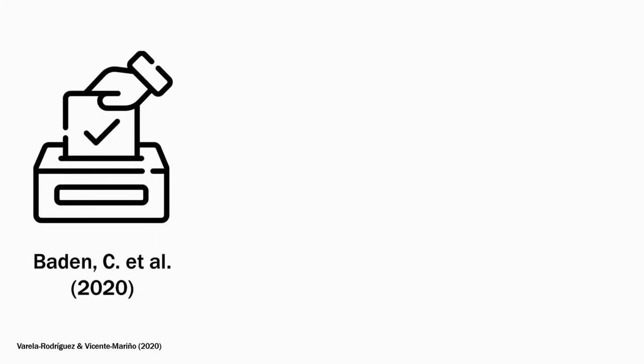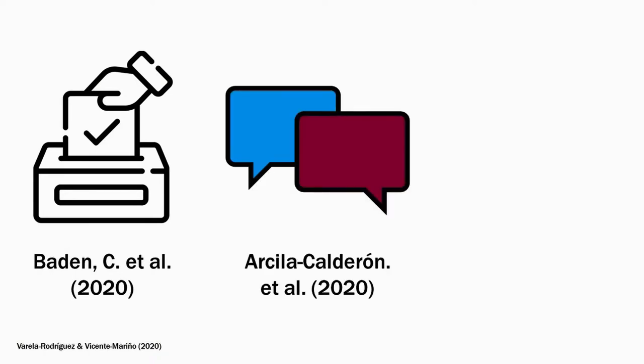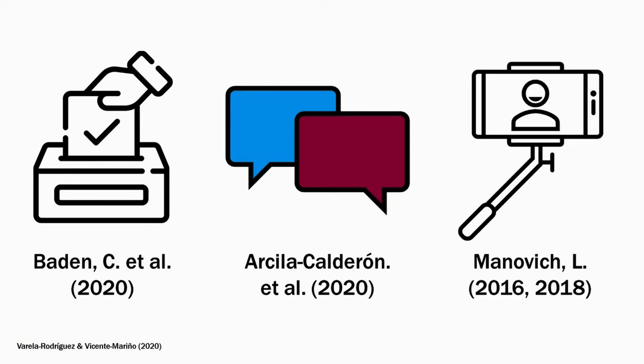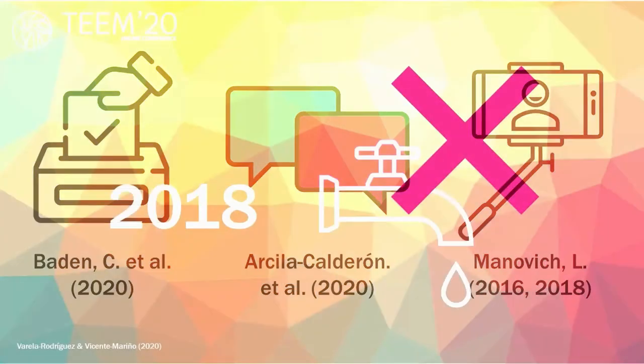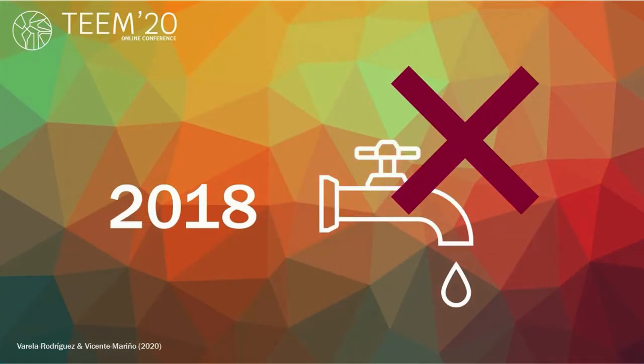Examples of research using social media images and text abound, especially when it comes to political communication, polarization, or cultural studies more generally. Work on Instagram, however, has been greatly affected by the Cambridge Analytica controversy, leaving most Instagram research limited or moving in grey areas legally speaking.